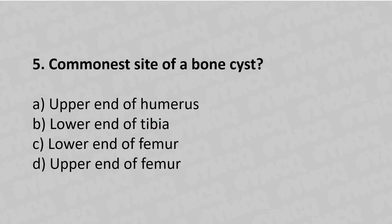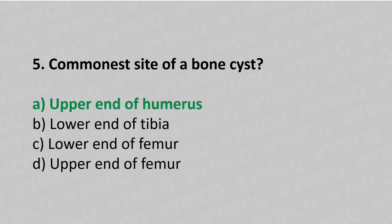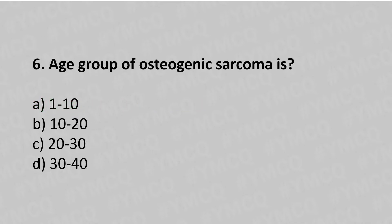Question 5: The most common site for osteoclastoma is — option A: upper end of the humerus, option B: lower end of the tibia, option C: lower end of the femur, option D: upper end of the femur. The answer is option A: upper end of the humerus.